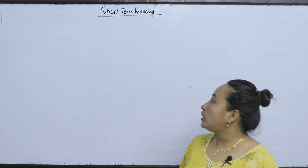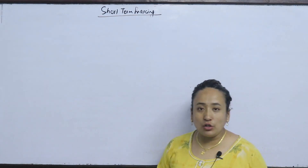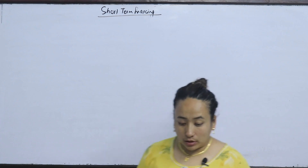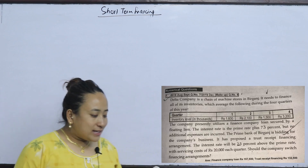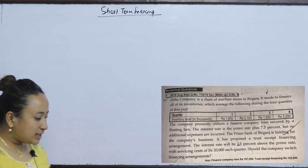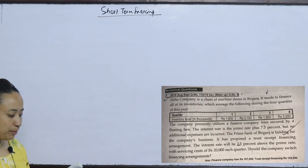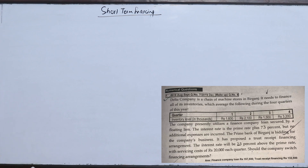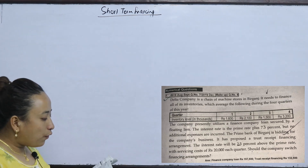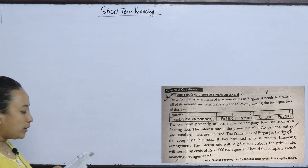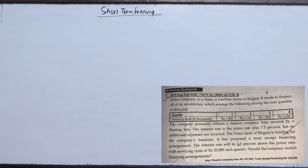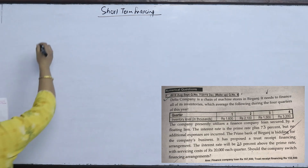Welcome to Short Term Financing Numericals. I am going to talk about short term financing. Delta Company is a chain of machine stores in Birgons. It needs to finance all of its inventories, which average the following during the 4 quarters of this year. This is a different inventory for this year.